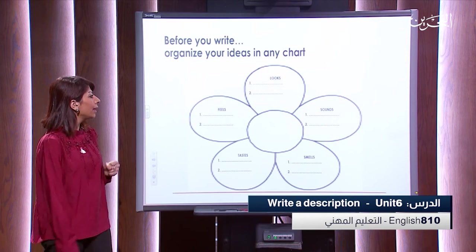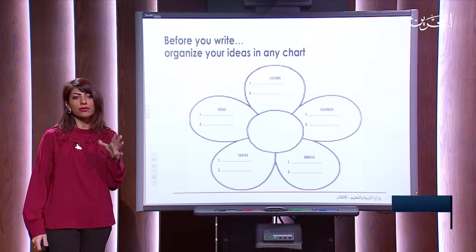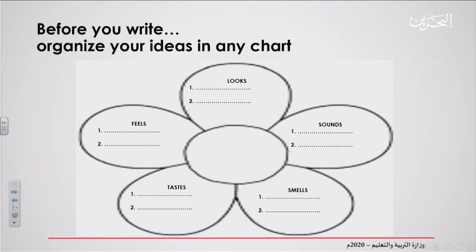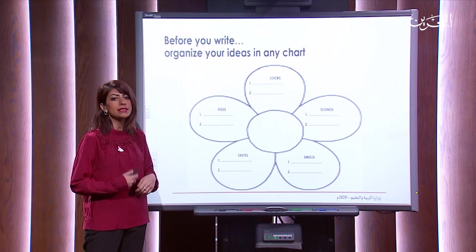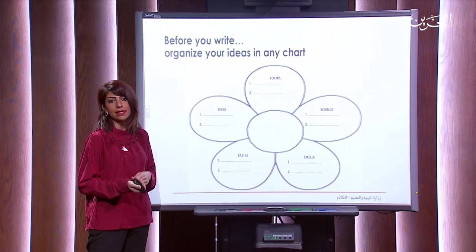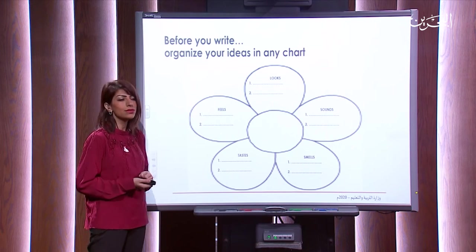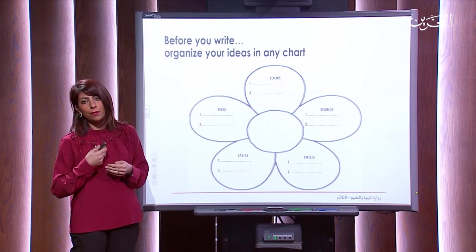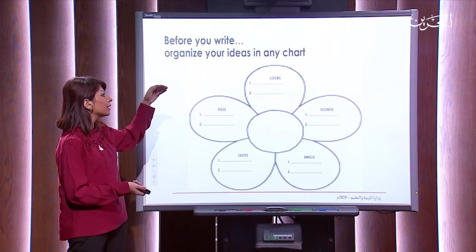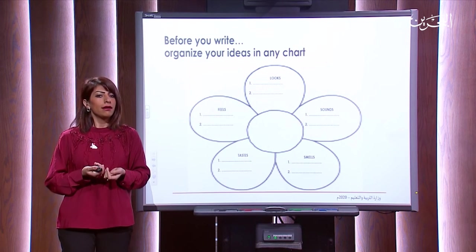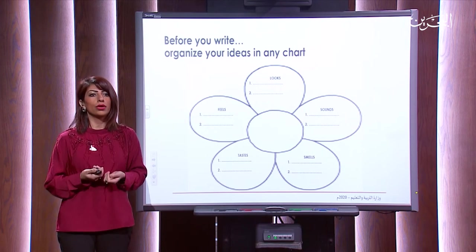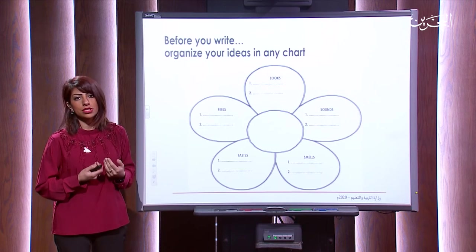Here I have five important details to mention in descriptive writing, corresponding to the sensory details. Starting with looks — write the things you are going to see at the place you are describing. For example, going back to Bahrain Museum, you could write at least two things you could see there, such as historical cars or old traditional jobs that were done in Bahrain.